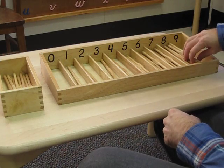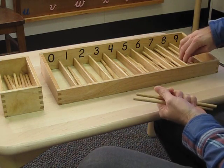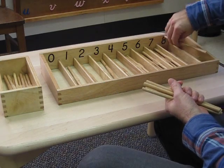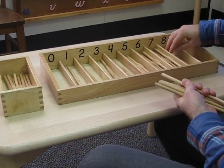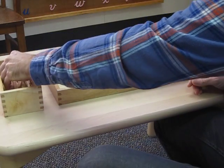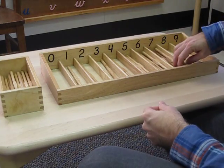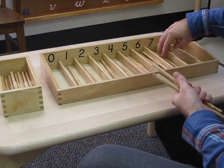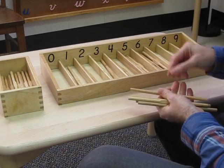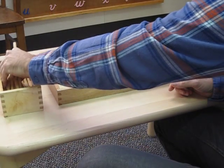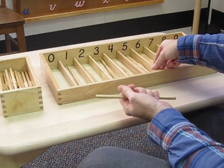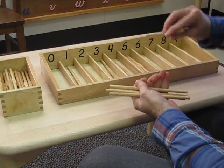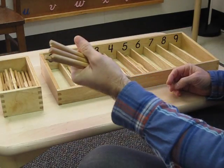We're going to put away eight: one, two, three, four, five, six, seven, eight. We're going to put away seven: one, two, three, four, five, six, seven. We're going to put away six: one, two, three, four, five, six. You can feel the amount getting smaller.